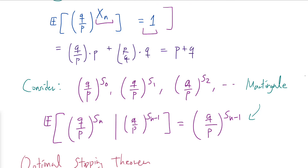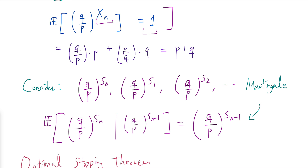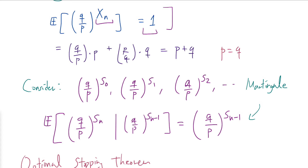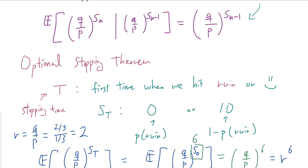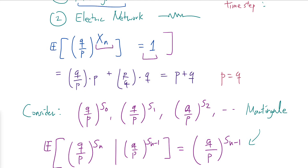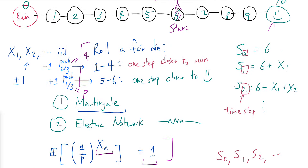The key clever insight was constructing this martingale sequence. One thing to mention: this breaks down when p = q, because then r = 1 and we'd be dividing by r^10 − 1 = 0. In that case we need a different martingale. When p = q = 1/2, xₙ has expectation 0, so we can simply use the sequence s₀, s₁, s₂, which is itself a martingale, and derive a similar conclusion.